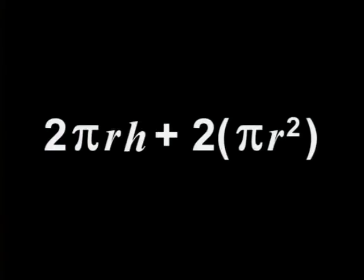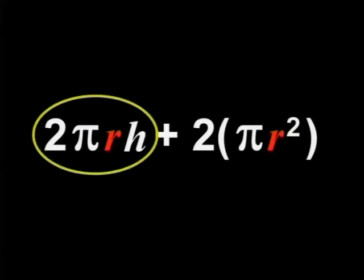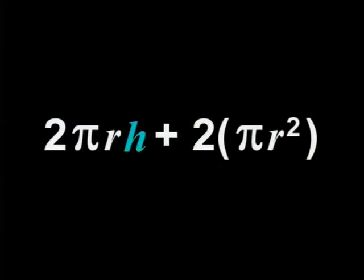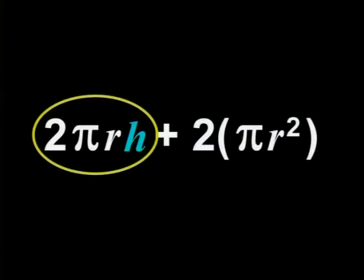If we have another look at the formula for the surface area, this actually makes sense. Can you see that the value of the radius will affect this term in the formula and this term? But the value of the height only affects this part of the formula. So a decrease of the radius is likely to have a greater effect on the total surface area than a similar decrease in the height.